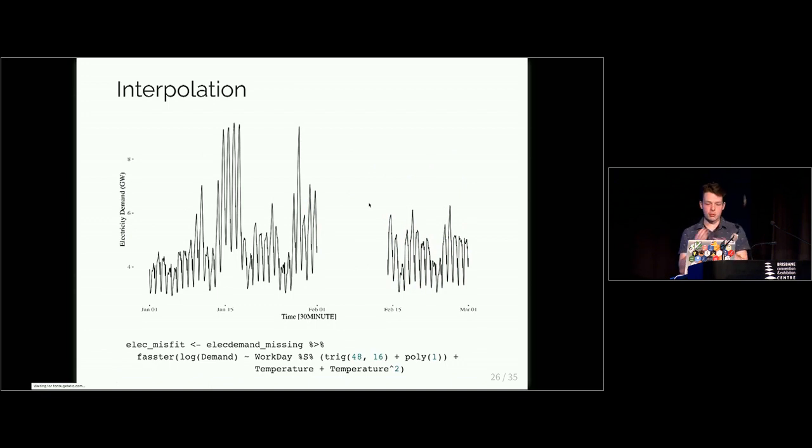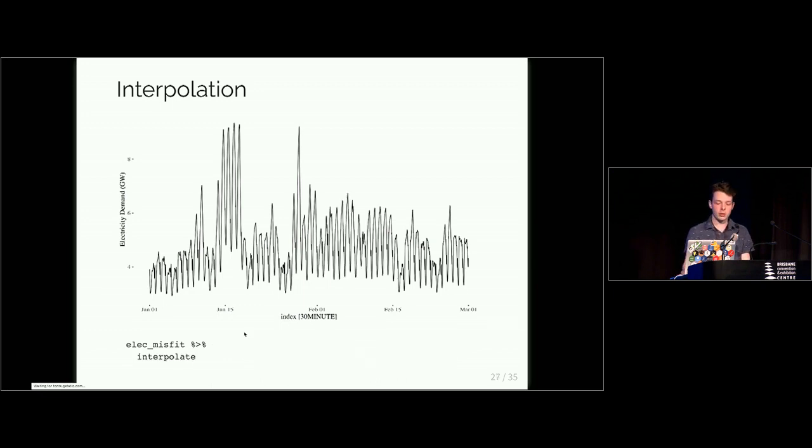Another feature, so FASTA does more than just modeling and forecasting, it can also interpolate your data which is especially relevant for this high frequency data where we have commonly observed missing values. All you need to do is pipe your data with missing values into your model function. So here's a representation of the missing values in our data and once we've fitted this data we can use the fitted values and the filtered response to interpolate our missing values and that's just using the interpolate function. No extra information needed.